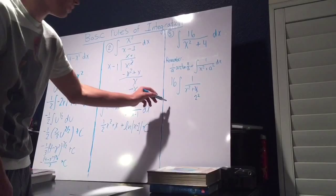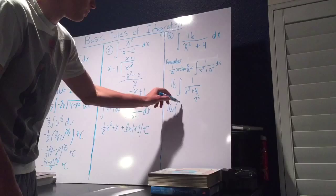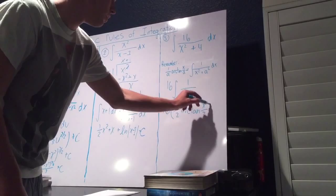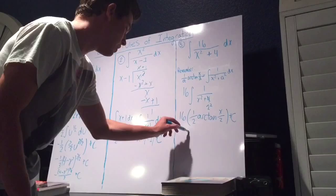We get 16 times 1 over a, which is 1 half, arctan of x over a, which is 2, plus c. We distribute the 16 in, and we get 8 arctan of x over 2 plus c.